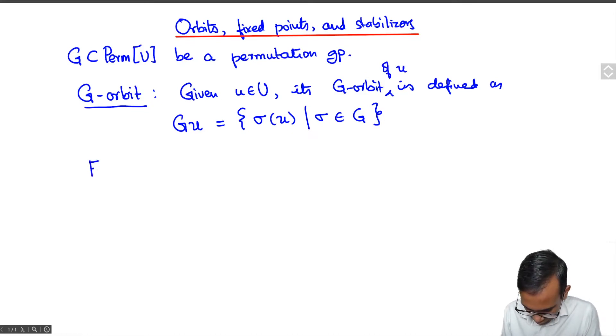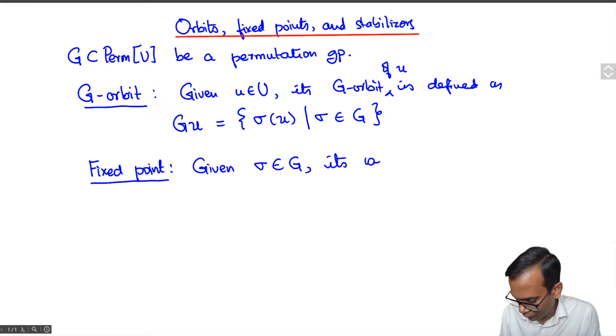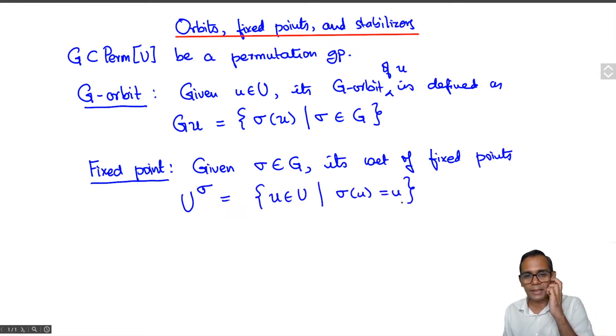The second definition is that of a fixed point. Given sigma in G, its set of fixed points is denoted usually by U superscript sigma and this consists of all the elements U in U such that sigma U is equal to U. So these are the points that are fixed by the permutation sigma.